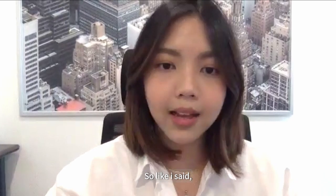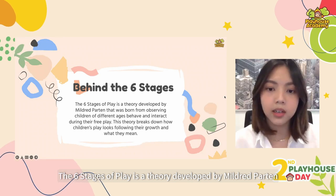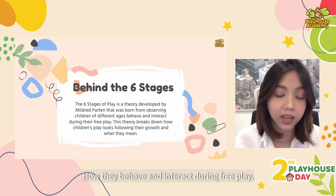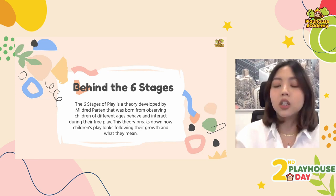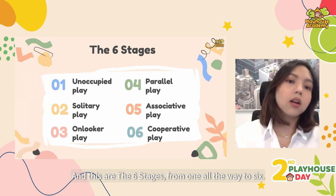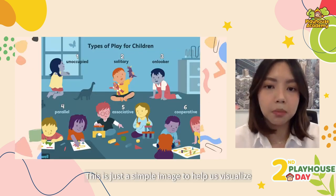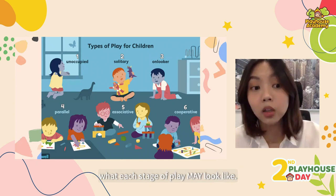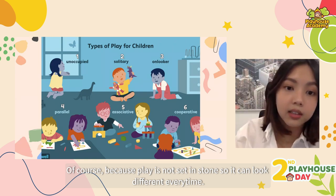The six stages of play is a theory developed by Mildred Parton, born from observing children of different ages and how they behave and interact during free play. This theory breaks down how children's play looks following their growth and what it means. These are the six stages from one all the way to six, and this is just a simple image to help us visualize what each stage of play may look like. Of course, play is not set in stone, so it can look different every single time.